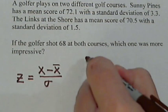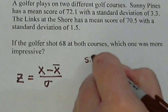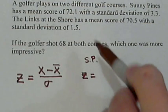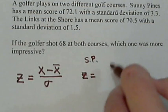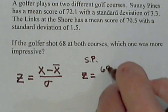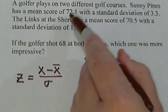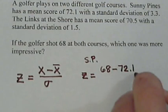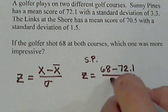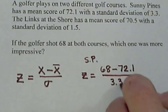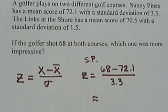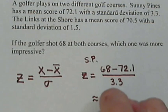So let's see what we got. At Sunny Pines, we calculate the z for Sunny Pines. He shot, his score was 68, minus the mean at Sunny Pines was 72.1, and the standard deviation was 3.3. And this gives us a z value of about negative 1.24.